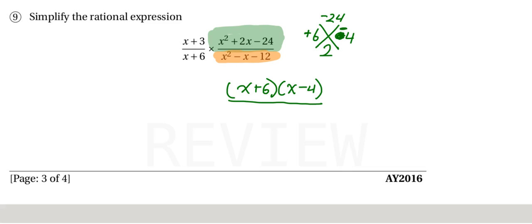And then across the bottom, taking a look at what that's going to factor into, I need two numbers that will multiply to give me negative 12, but add to give me negative 1. I can say negative 4 and positive 3. Double checking that, negative 4 times 3 is a negative 12. Negative 4 plus 3 is negative 1. So this fraction is going to be x minus 4 over x plus 3 after it factors.